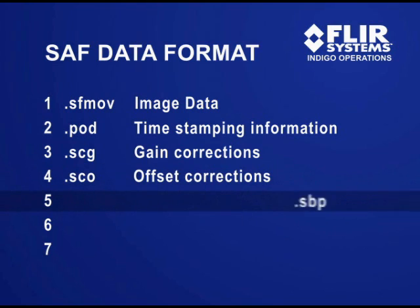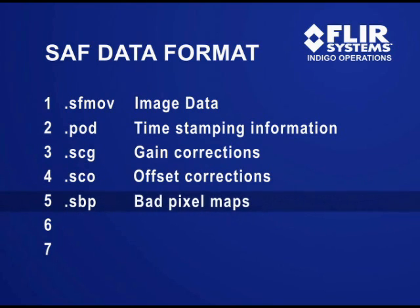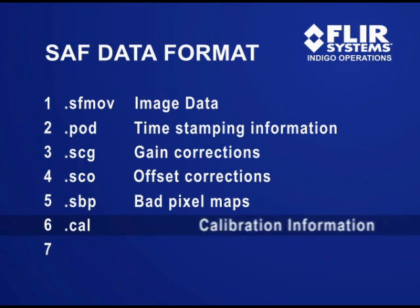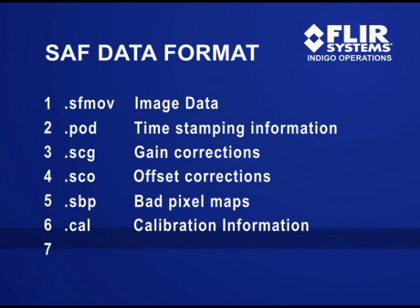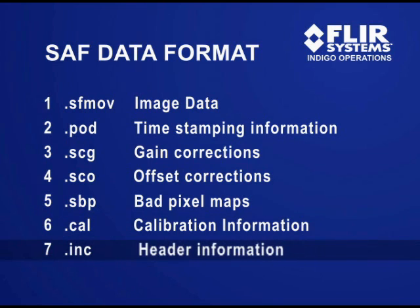The .sbp contains bad pixel maps. The .cal contains calibration information. And the .inc contains header information.